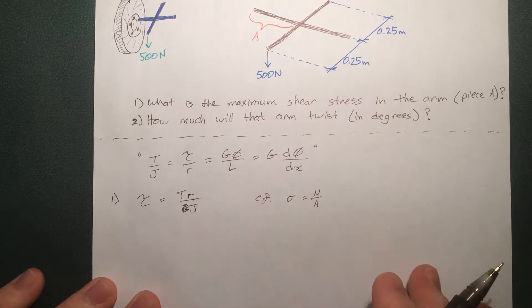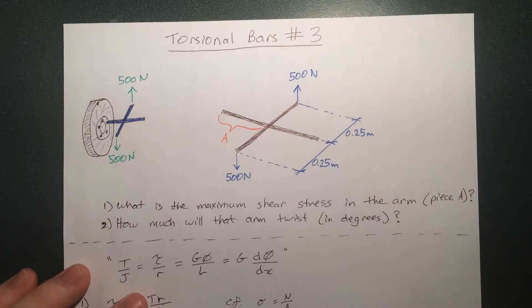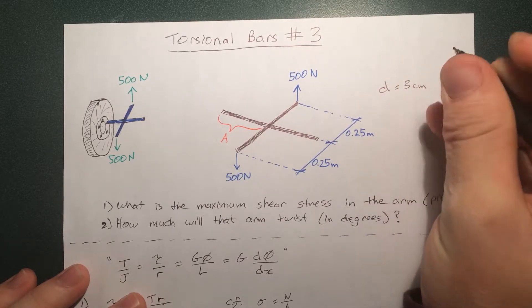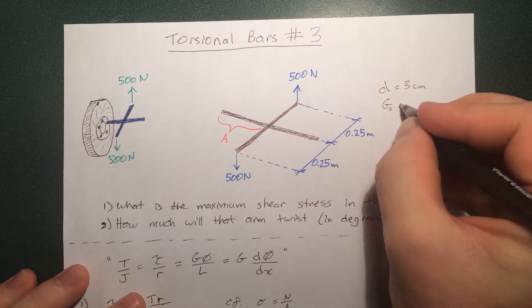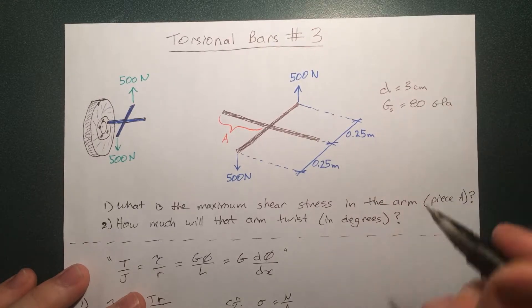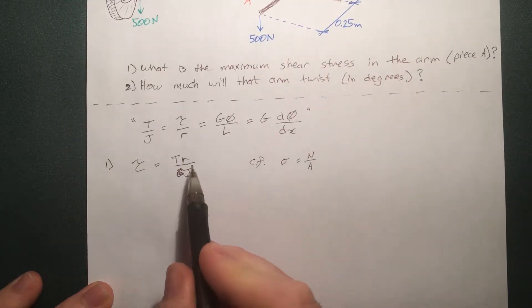We're given, or not given, let me just tell you, the diameter of this thing to be 3 centimeters. And also I'll give G, it's made of steel, it's 80 gigapascals. So we can use this equation here. We know the radius and we can find J and find T. So let's go about finding T first.